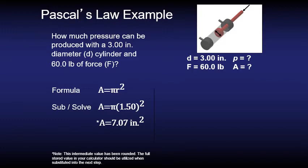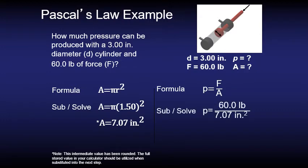So let's put that into the Pascal's law formula. Pressure is force over area. When we put those numbers in, the 60 pounds of force and the 7.07 inches squared of area, we get a pressure of 8.47 pounds per inch squared.